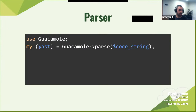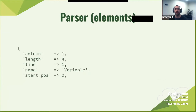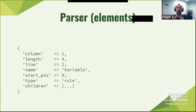Here's an example of the parser: you can just call 'Guacamole->parse' and you get an AST back. You get the parser element, which has the column, the length, the line, the name, the start position, the type, and all of the children. So for every rule element, you know which line it's on, which column, how long it is, what type of rule it is, what the name is, and all the children related to it. The lexeme has a value and a type. The name exists and is empty for lexemes, so you don't have to check whether it's a lexeme or a rule first when you just want to compare names.